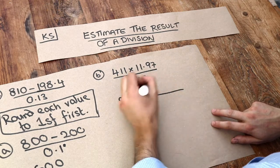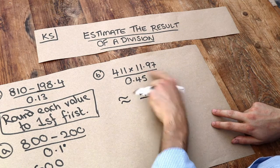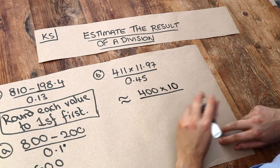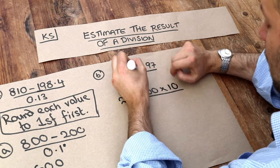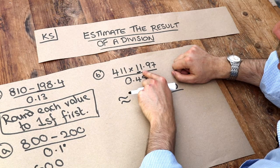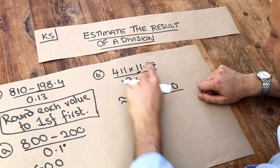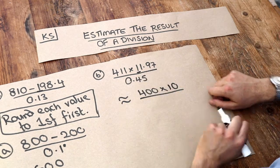So that to one significant figure is 400. This to one significant figure is just 10, because again we just look at the first digit. Then is that digit after at least 5? No it isn't, so that stays as 1. But we need to replace this one here with a 0 because otherwise that 1 is no longer the tenth digit.